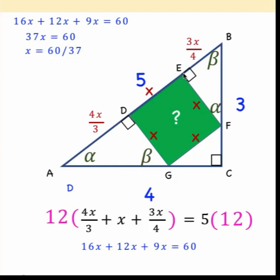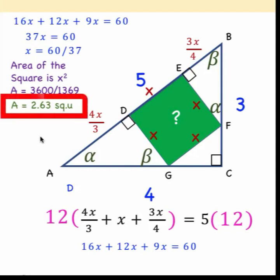So the length of the side of the green square is x equals 60 over 37. And so we can now find the area. We just have to square x. And so squaring x, we get square of 60 equals 3600. Square of 37 equals 1369. Dividing this, we get a value of 2.63 square units. And so the area now of the green square is 2.63 square units. And that is now our final answer.